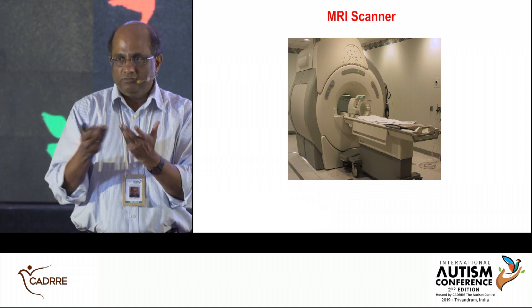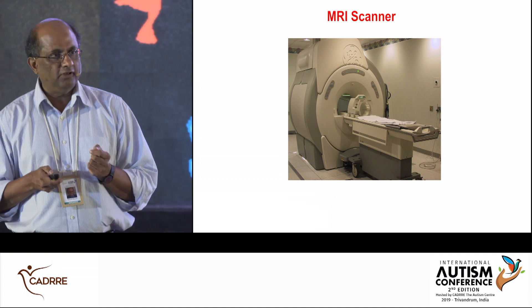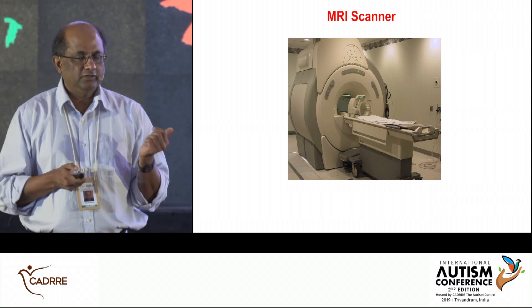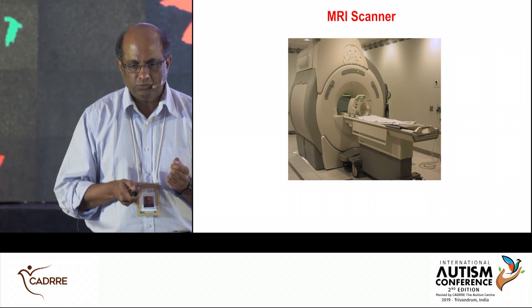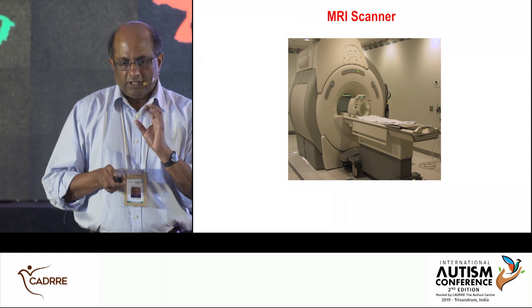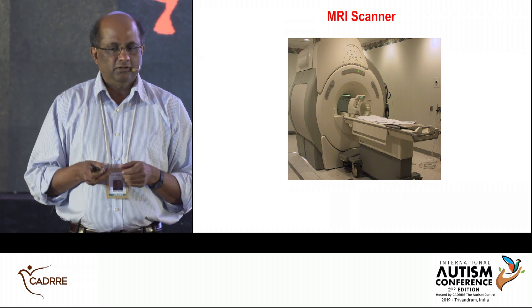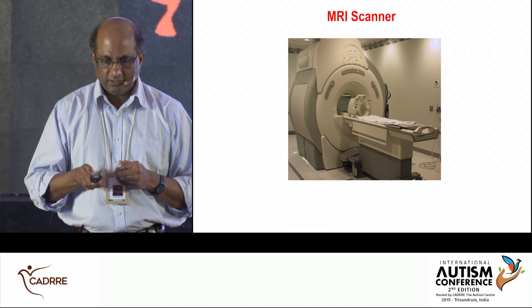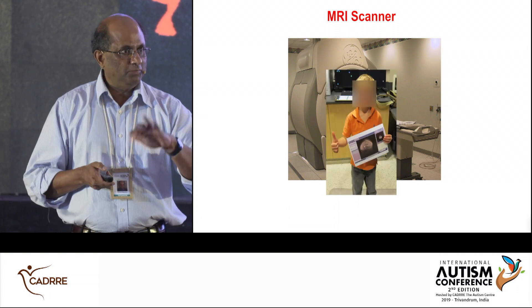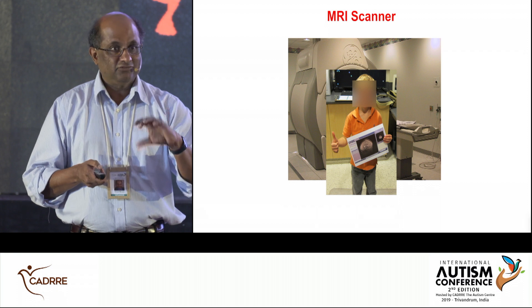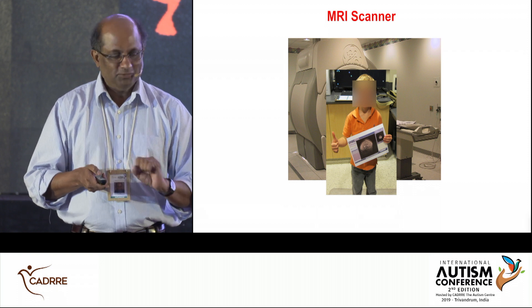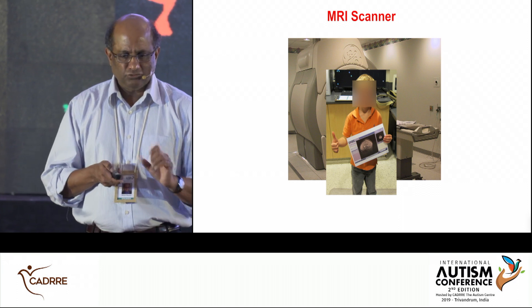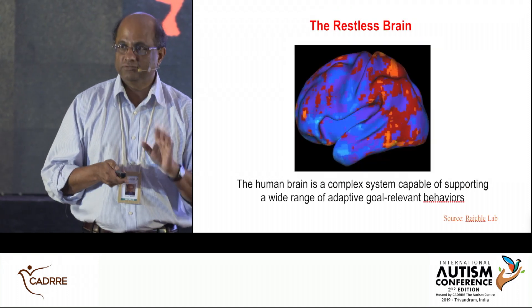The technology we use is a standard 3-Tesla MRI scanner, things you see in any modern city around the world. The pulse sequence has been tailored to acquire brain images every almost half a second. Here's a child who's come out pretty pleased with the image of his brain in his hand, which children really love. We've actually scanned more than a thousand children over the years.